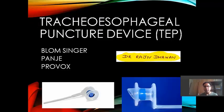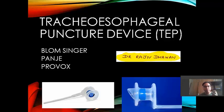What are TEP devices? A TEP device is actually a unidirectional valve which is surgically placed between the trachea and esophagus. It is used for vocal rehabilitation after total laryngectomy has been done. It is a single-direction valve, so it allows the flow of air from the trachea to the esophagus, and that air is ultimately used to produce sound.